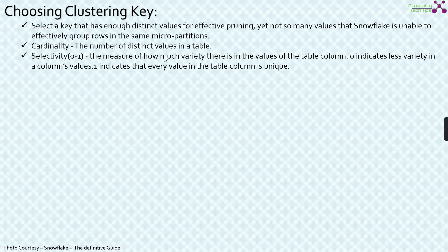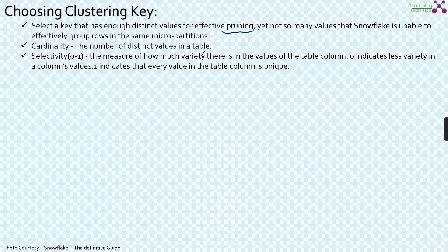Finally, let's discuss how to choose a clustering key for a specific table. A clustering key is the mechanism by which you instruct Snowflake to use a specific column as the clustering mechanism for that table. Snowflake automatically does clustering internally when data is loaded, but we can override that. The clustering key can be chosen using cardinality and selectivity parameters. We should select a key with enough distinct values for efficient pruning, yet not so many values that Snowflake is unable to efficiently group rows in the same micro partitions.